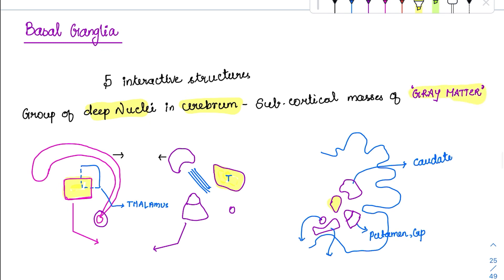Basal ganglia is nothing but grey matter. Grey matter is nothing but the nuclei, whereas white matter is formed by the axons — all the axons together form the white matter.